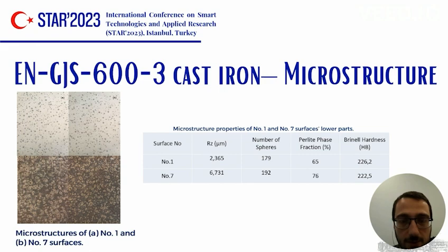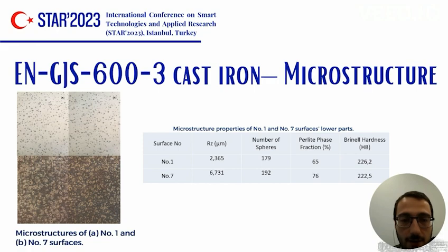On the investigated parts, there are seven discrete surfaces on each. Surfaces number one and number seven of the two parts are taken into account. Here their microstructure properties are shown, along with images taken from the microscope. After the face milling process, surface roughness and hardness measurements were done on these surfaces and are shown in the table.